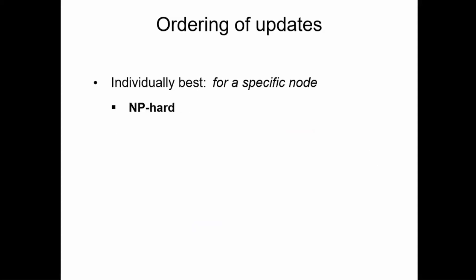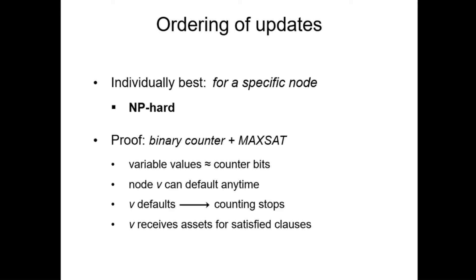So as surprising as it sounds, in some cases early defaulting is the only strategy that allows a node to survive at the end of the sequential process. In general, we can also show that finding the best time to report the default is an NP-Hard problem, even if the rest of the system is completely predictable. To prove this, we can essentially combine the binary counter construction with a MAX-SAT reduction idea. The bits of the binary counter represent the values of the different variables, so the counting process enumerates all different variable assignments. We also have a special node V which can report the default anytime, immediately terminating the counting process, and the system provides new assets back to V based on the number of satisfied clauses in the formula — so stopping the counter at the right time corresponds to selecting the best variable assignment.